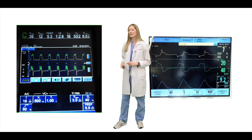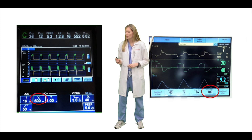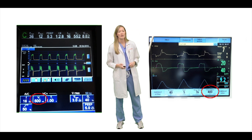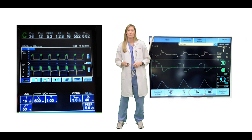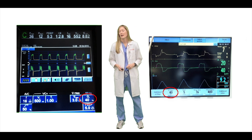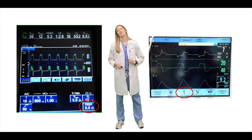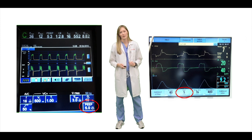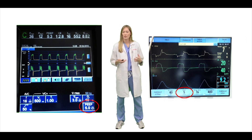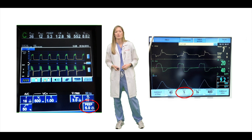The next thing you'll want to look at is your set tidal volume, followed by your set respiratory rate, your FiO2, and your PEEP. Once you've found these modes set on the ventilator, you'll understand what mode your patient is in currently, and then you can look at some of the variables.